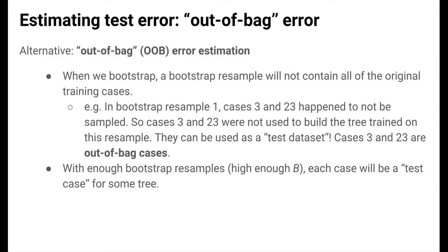An alternative to cross-validation for estimating test error in the bagging setting is out-of-bag error estimation, abbreviated OOB. When we bootstrap, a bootstrap resample is not going to contain all of the original training cases. For example, in our first bootstrap resample, cases 3 and 23 were not sampled — they were not used to build that tree, so they can be used as a test dataset. These are called out-of-bag cases. With enough bootstrap resamples — high enough B — each case will be a test case for some tree.